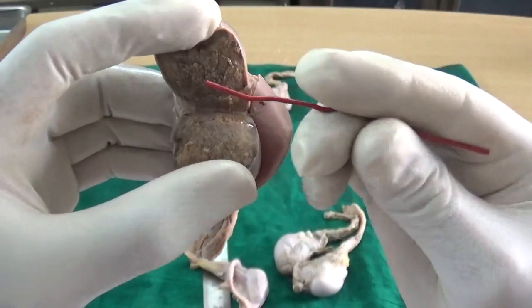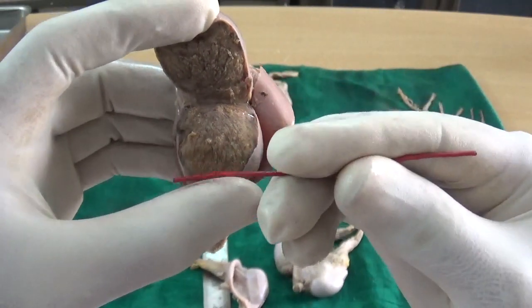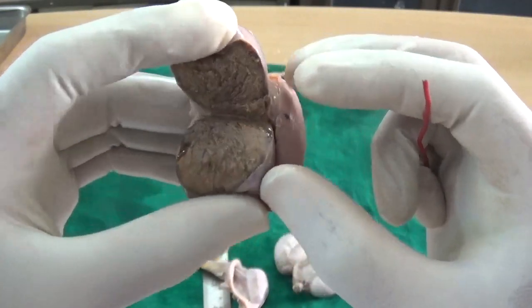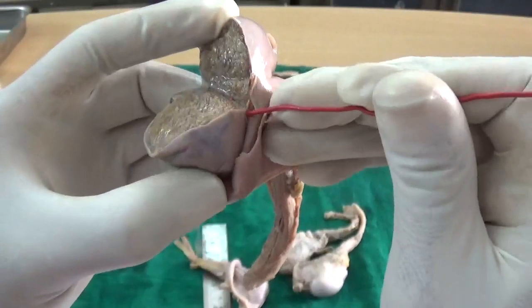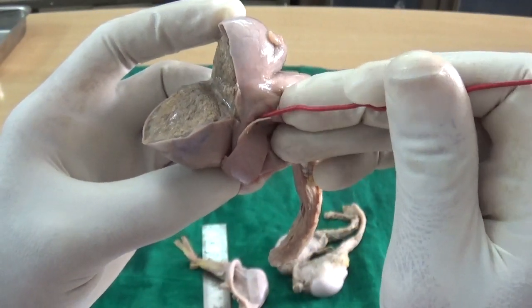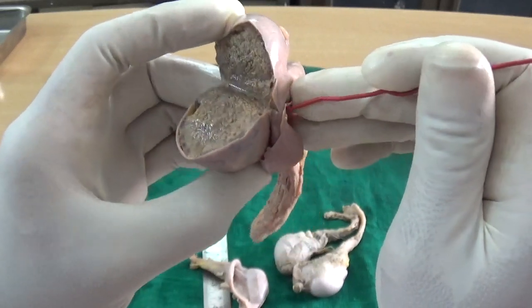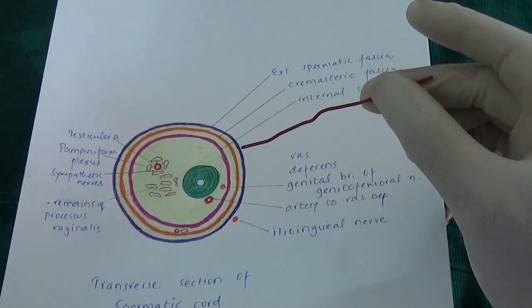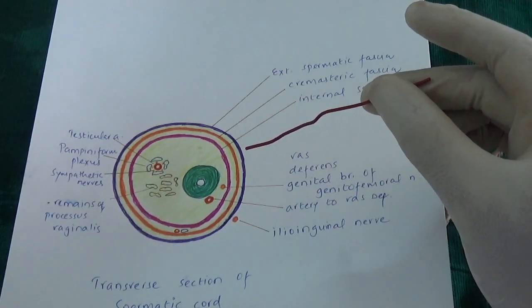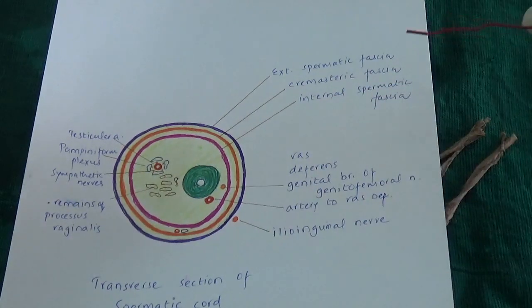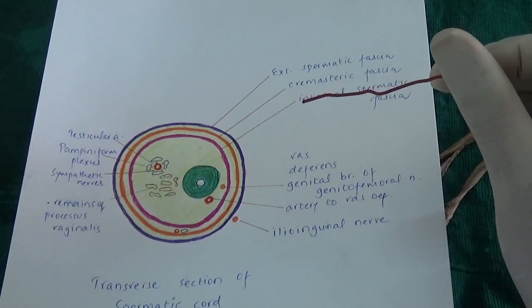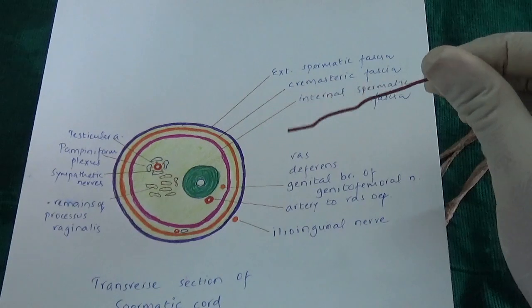Observing a horizontal section of the testes: at the posterior border, testicular vessels and nerves enter or exit. The rete testis exits via efferent ductules which enter the head of epididymis, then the body and tail of epididymis. The tail of epididymis continues as the vas deferens or ductus deferens, which runs through the spermatic cord.